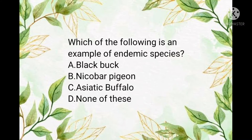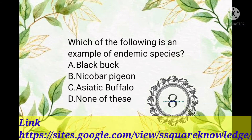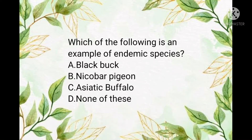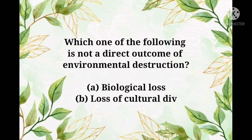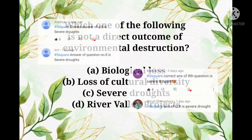Question number seven: which of the following is an example of endemic species? You can also find the names of animals with their species categories on our website. Question number eight: which of the following is not a direct outcome of environmental destruction? The answer is severe drought. Thanks to those who gave the correct answer.